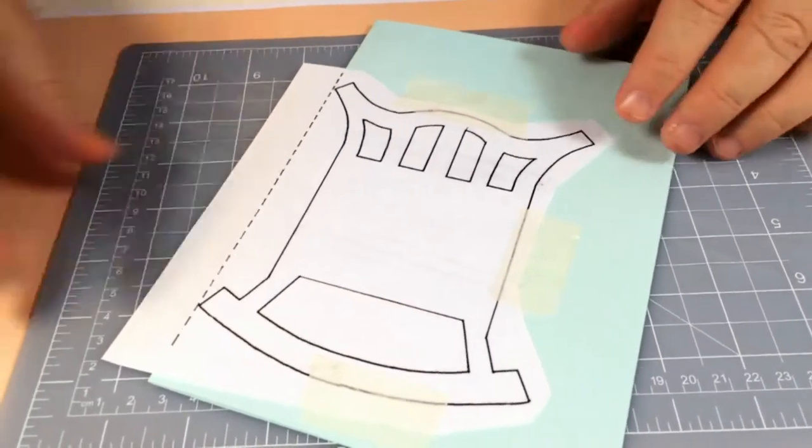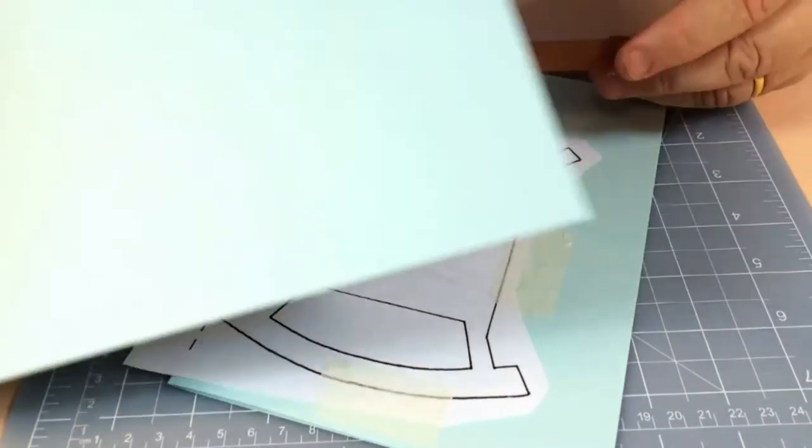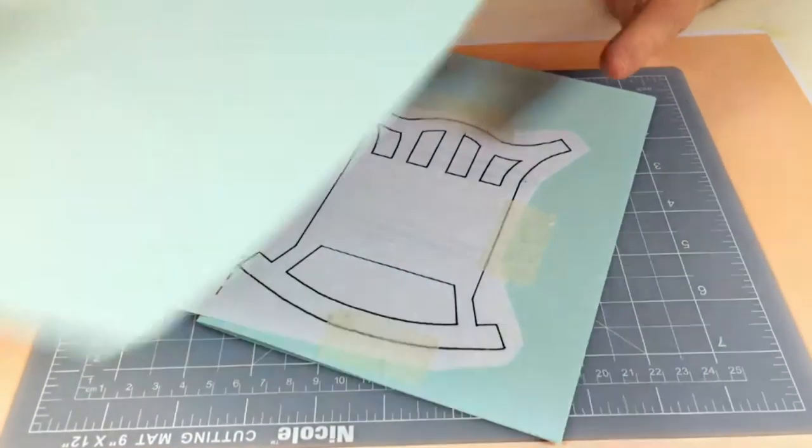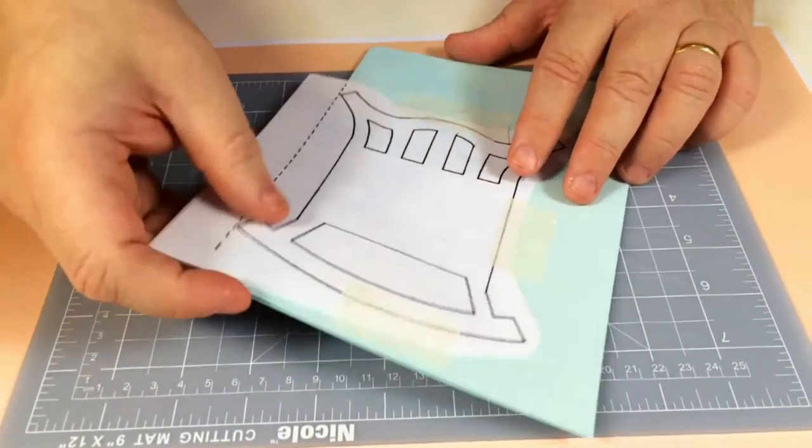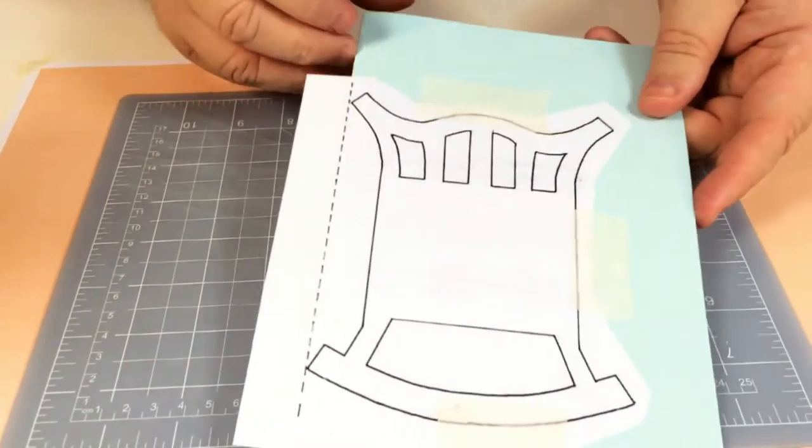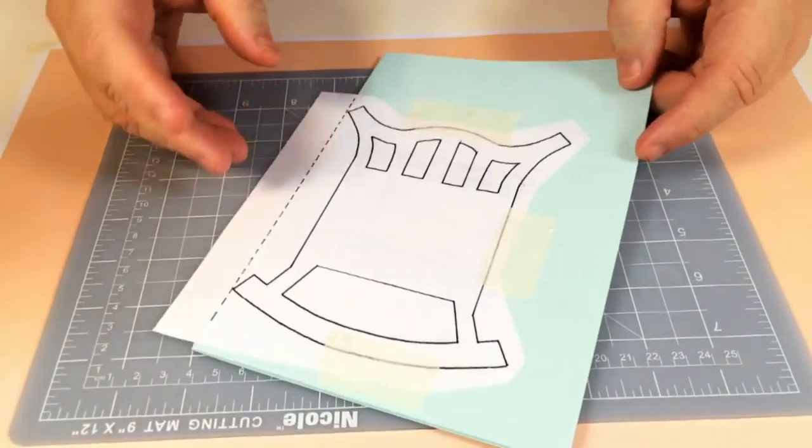Now I've cut this one out and stuck it down onto this piece of card. This piece of card is simply a large piece of card like that, folded in half, and when you've folded it in half I've just stuck this down on the front. I've put where the crease is in the card there, that dotted line, so it knows exactly where this is going to fold.